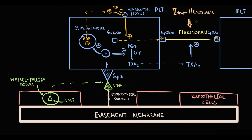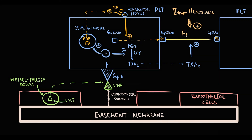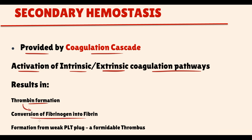The function of secondary hemostasis is to convert the weak platelet plug into a formidable structure called a thrombus. What makes the platelet plug formidable is the conversion of unstable fibrinogen into stable fibrin. Secondary hemostasis is provided by coagulation factors that form the coagulation cascade, and activation of the cascade results in formation of thrombin, which converts fibrinogen into fibrin, making the weak platelet plug a formidable thrombus.